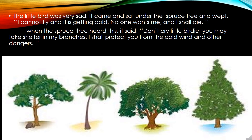The little bird came and sat under the saprosse tree and wept (yeh aakar saprosse darakht ke neeche baith gaya aur roya). 'I cannot fly and it is getting cold (main ud nahi sakta aur sardi barh rahi hai). No one wants me and I shall die (koi mujhe nahi chahta aur main mar jaunga).' When the saprosse tree heard this, it said: 'Don't cry, little birdie (chote birdie, mat ro).'